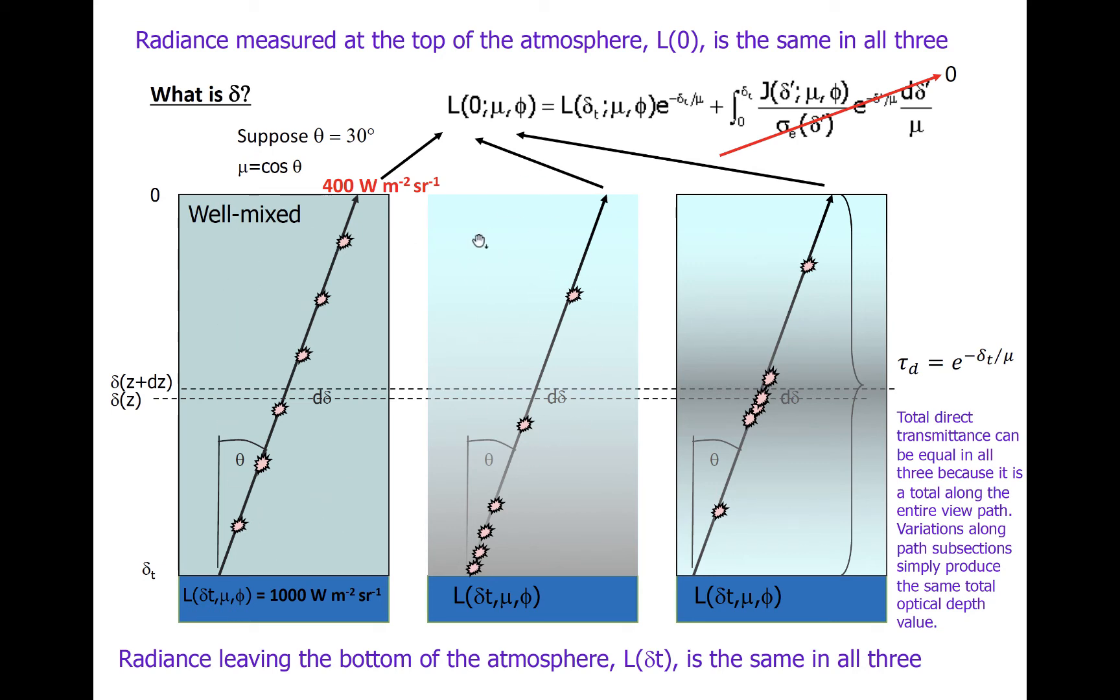The first atmosphere on the left is a well-mixed homogeneous atmosphere. The second atmosphere at middle has more aerosols in the lower troposphere than aloft. The third atmosphere is one that contains a layer of aerosols in the middle of a troposphere and fewer below and above it. It is possible for all three of these atmospheres to have the same direct transmittance. That's the assumption we're going to make in this particular example.